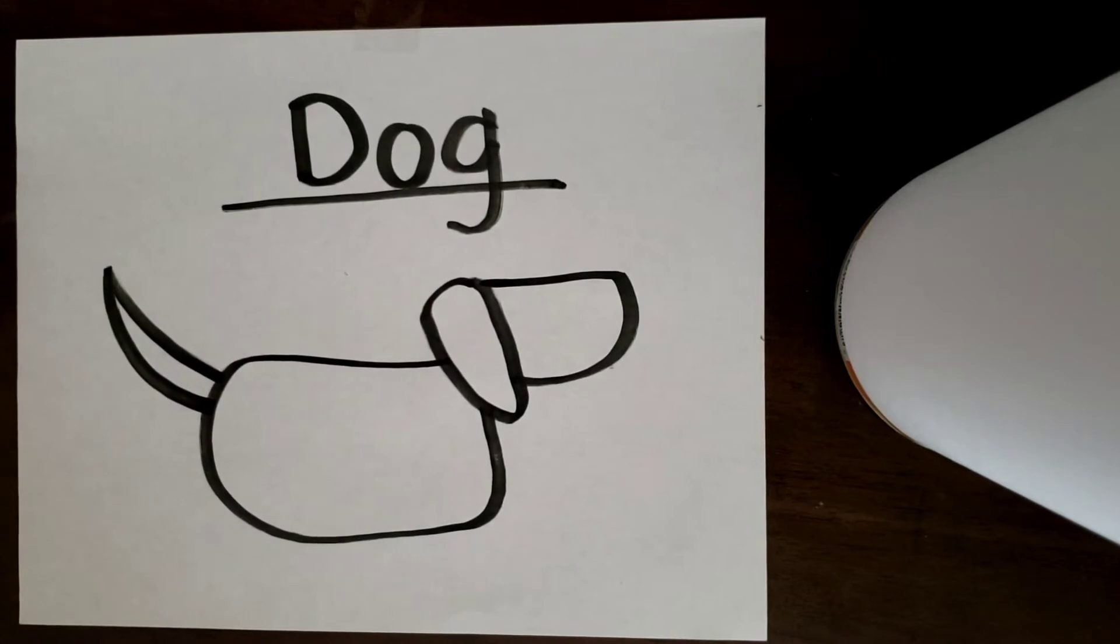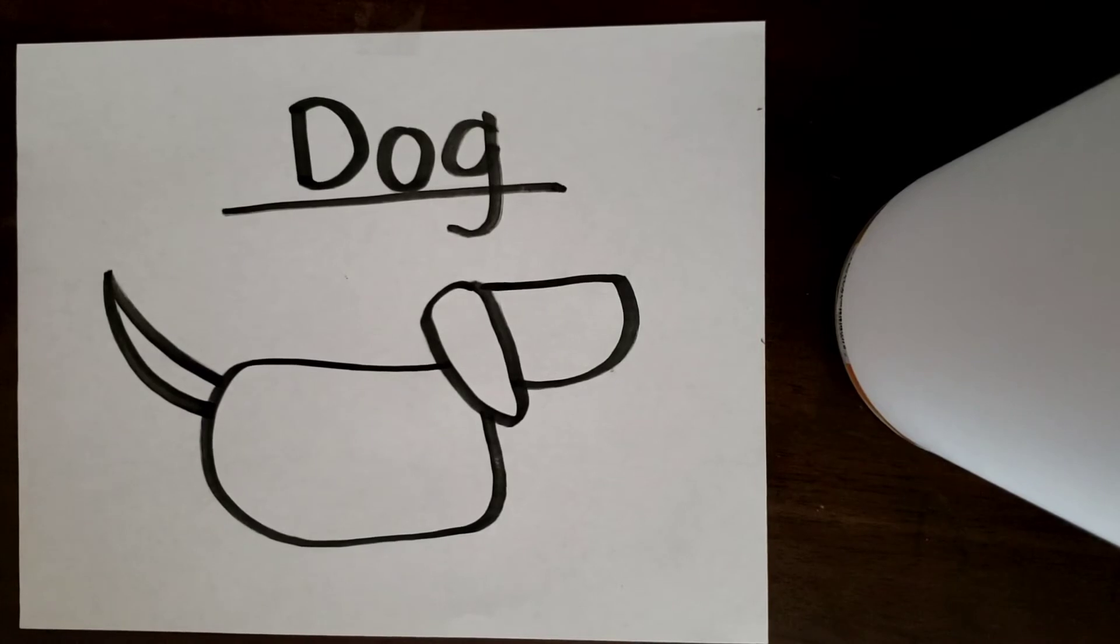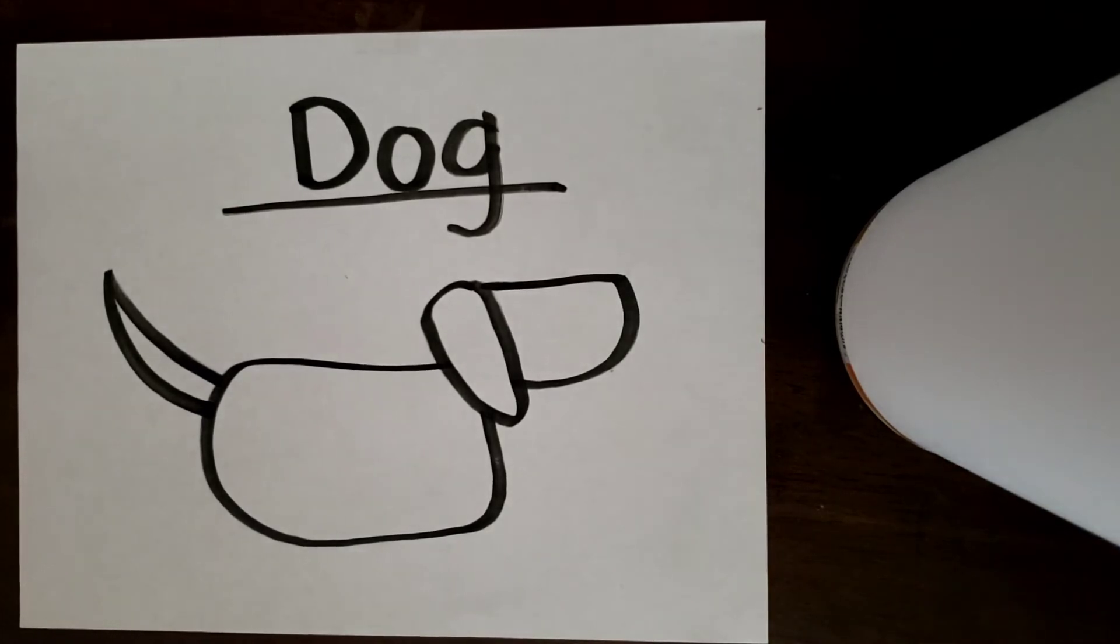Okay, now let's put on his legs. How many legs do dogs have? Four. Here we go.